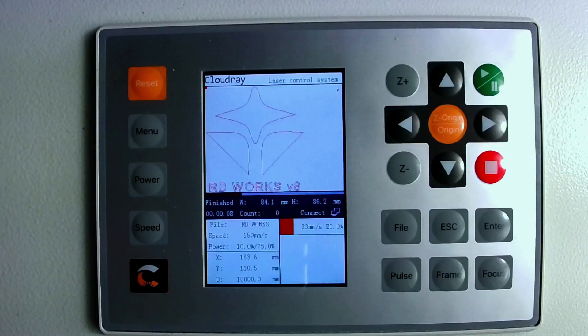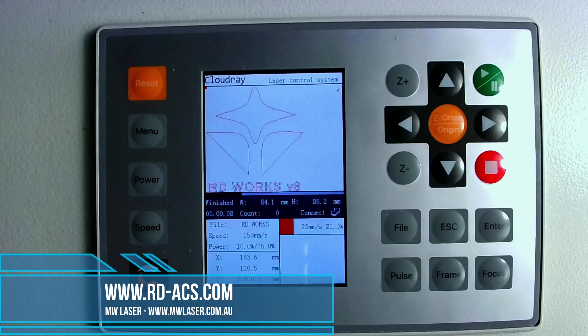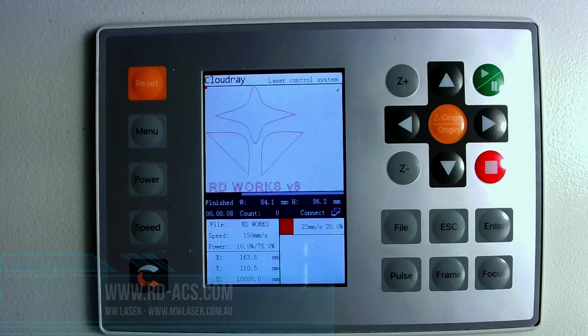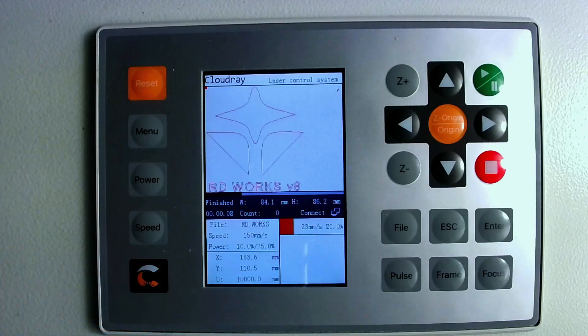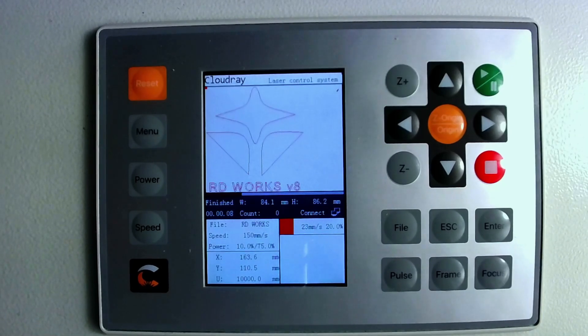To configure the controller for the steps for the axis and the length and the breadth of our work area as well as other laser settings we need to configure that using RDWorks. Now we need to connect to the software first so install RDWorks, the download is available at rd-acs.com or mwlaser.com.au. Now you connect via ethernet or USB. The easiest is just to connect a PC via USB to the connection on the side of the machine.